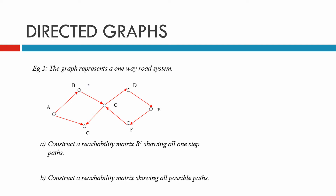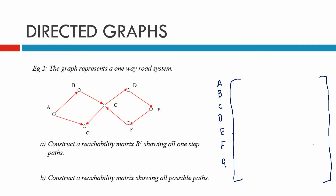Example 2: the graph represents a one-way road system again. Construct a reachability matrix R1 showing all one-step paths. This is quite a big matrix because we have nodes A, B, C, D, E, F, and G. Remember, this is one step only, so connections have to go directly. A connects to B with a one, doesn't connect to C, D, E, or F, but does connect directly to G.